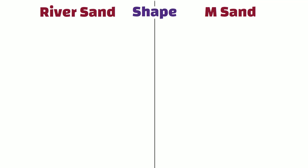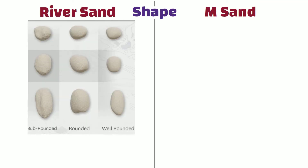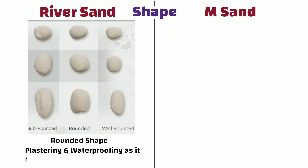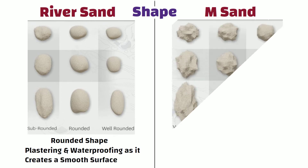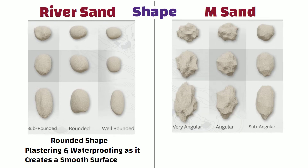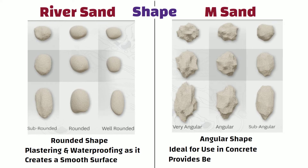Shape: River sand particles have a rounded shape, which makes it suitable for plastering and waterproofing, as it creates a smooth surface. Whereas manufactured sand has an angular shape, which makes it ideal for use in concrete, as it provides better binding strength.